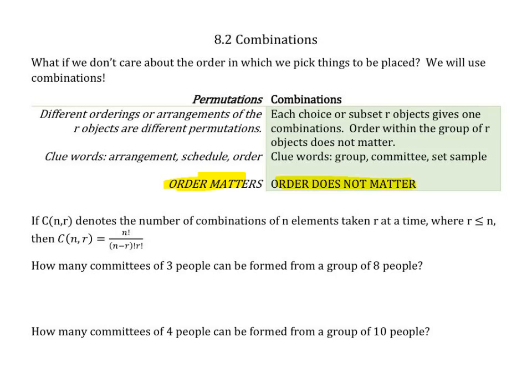Some clue words for permutations — things that we did in the last section: arrangement, schedule, order. Some clue words for combinations where order might not matter: groups, committees, set, sample, etc.